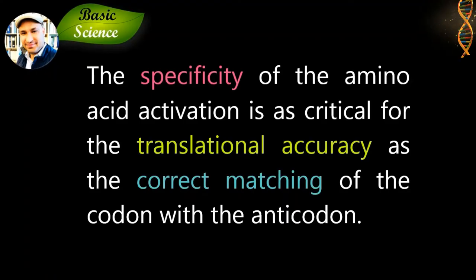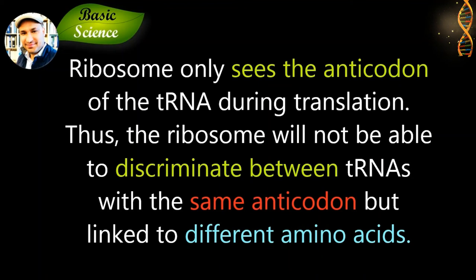The specificity of amino acid activation is as critical for the translational accuracy as the correct matching of the codon and the anticodon. The reason for that is ribosomes only see the anticodon of the tRNA during translation. Thus, the ribosomes will not be able to discriminate between tRNA with the same anticodon but linked to different amino acids.